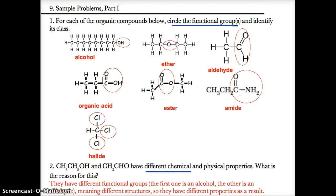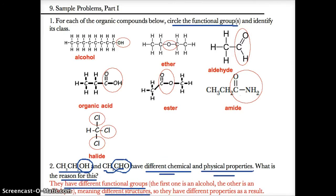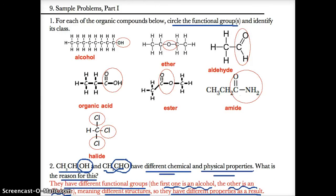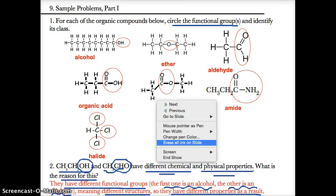In number two, CH₃CH₂OH and CH₃CHO have different physical and chemical properties. Even though both have two carbons, the non-hydrocarbon functional group of the first is OH (making it an alcohol) while the second has CHO or C double-bonded to O with H (making it an aldehyde). Different functional groups mean different structures, and different structures mean different physical and chemical properties as a result.